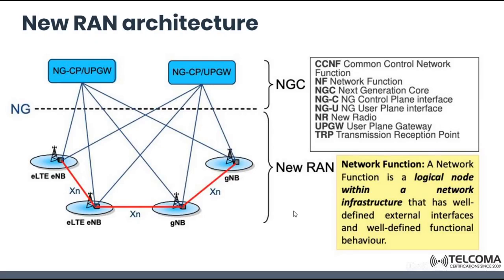An important point is that in the new RAN architecture, we have network functions — not network elements as in LTE. So what is a network function? A network function is a logical node within a network infrastructure that has well-defined external interfaces and well-defined functional behavior. They have external interfaces and a well-defined function, but they are all logical nodes. They are dynamic — they can be used as per the flexibility and requirement. Their location can be changed, and their functions can be changed as per the requirement and application to be implemented.